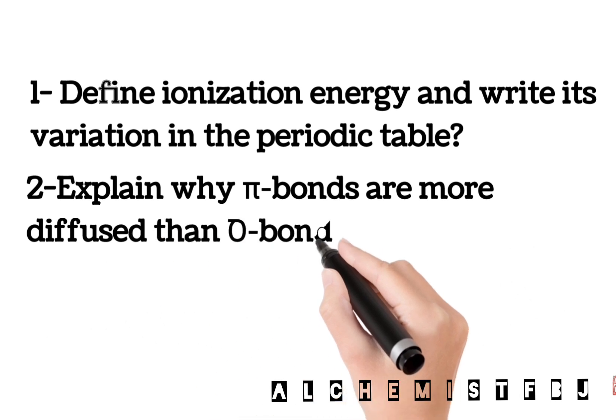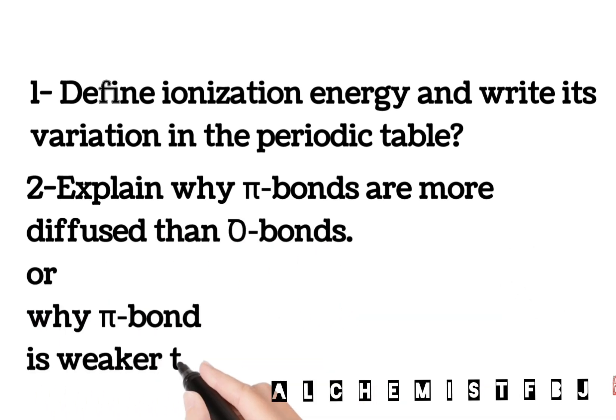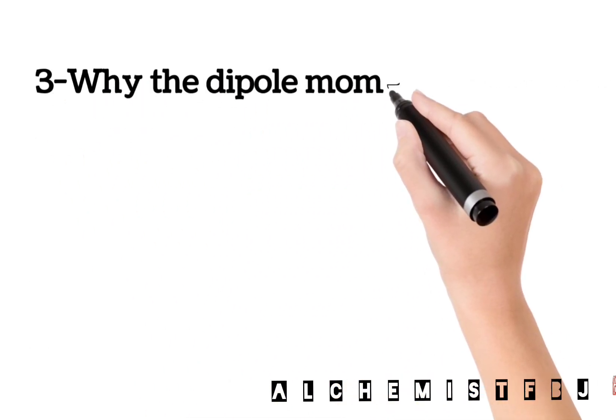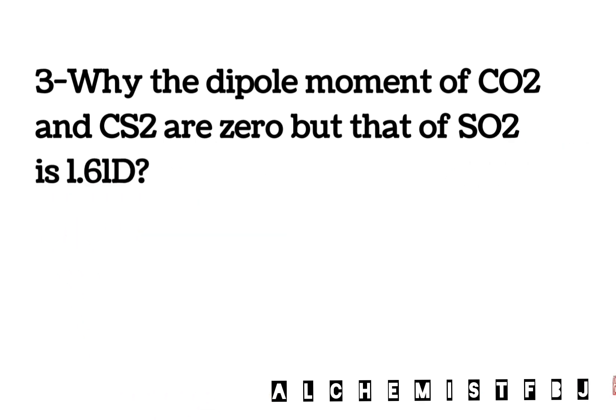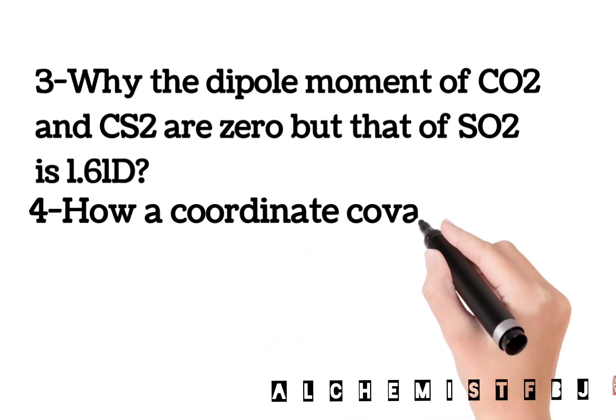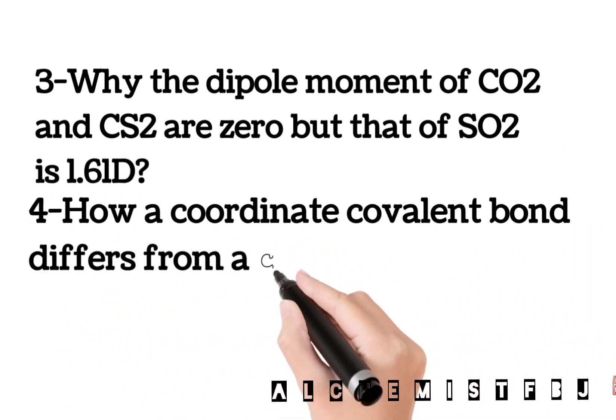Why the dipole moment of CO2 and CS2 are zero but that of SO2 is 1.61? How does a coordinate covalent bond differ from a covalent bond? What is bond order? Give an example.